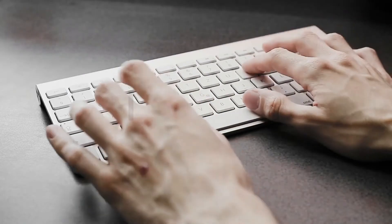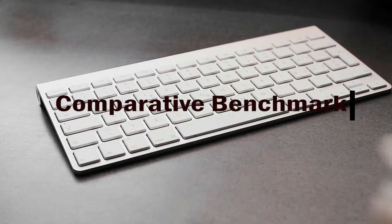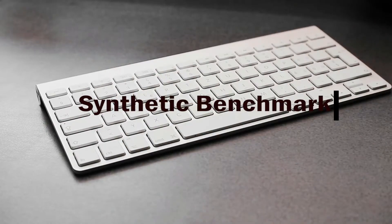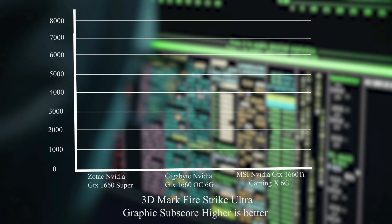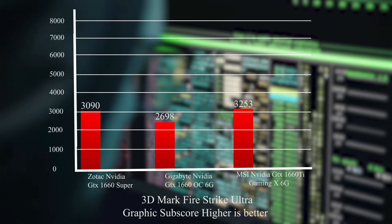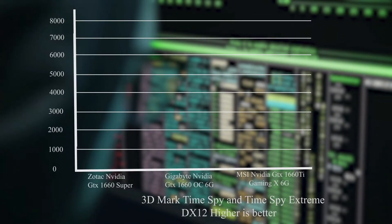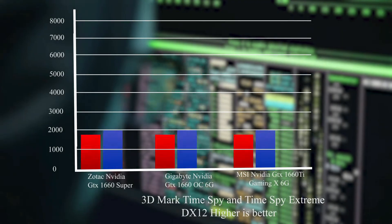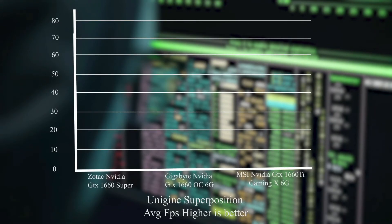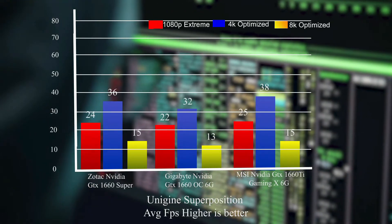Now let's compare this card with other cards in this range through comparative benchmarks. In 3DMark Fire Strike Ultra, the 1660 Super scored 3090, which is just about 200 points less than the 1660 Ti. In 3DMark Time Spy and Time Spy Extreme, the 1660 Super is outclassed by the 1660 Ti by around 500 points. In Unigine Superposition, the 1660 Super again scores slightly less — just a difference of 1 to 2 FPS.